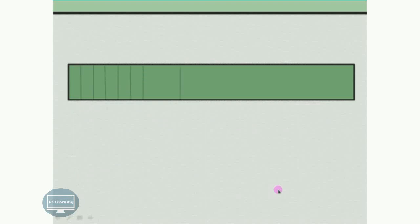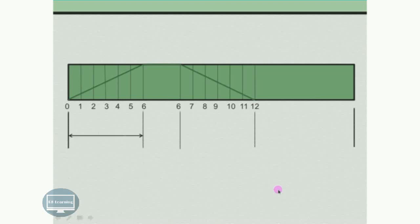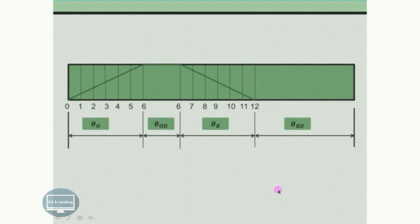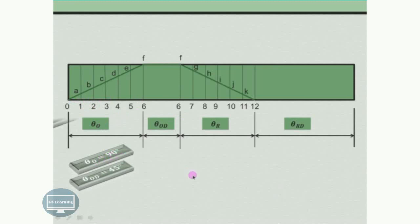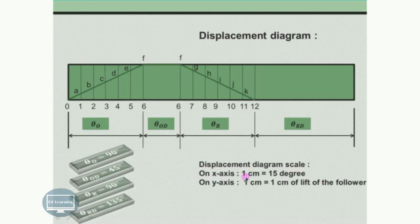On the x-axis we take crank angle and on the y-axis we take the lift or stroke of the collar. On the x-axis we have taken theta for the out stroke, which is 90 degrees. Taking a suitable scale for the displacement diagram, the scale chosen is 1 cm equal to 15 degrees, so 90 divided by 15 gives 6 cm, and we have divided that 6 cm length into 6 equal parts. On the y-axis the scale is 1 cm equal to 1 cm of lift, so the stroke of 3 cm gives a length of 3 cm.